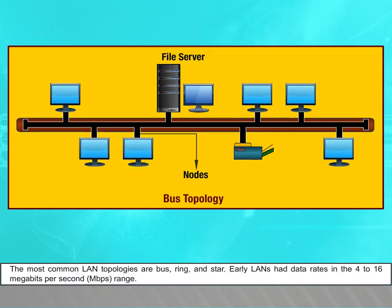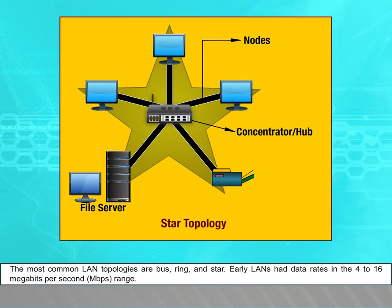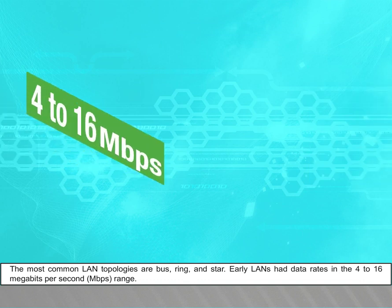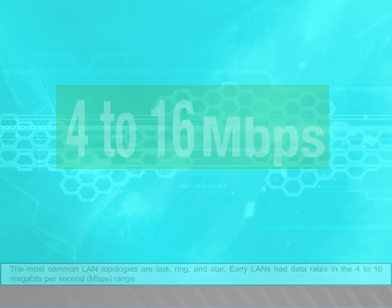The most common LAN topologies are bus, ring, and star. Early LANs had data rates in the range of 4 to 16 megabits per second, that is Mbps.